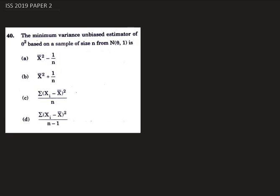Hello, today we are going to solve question number 4 from ISS 2019 paper 2. In this question we have to find the minimum variance unbiased estimator of theta squared based on a sample size of n from Normal(theta, 1).